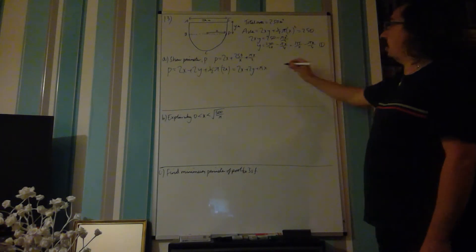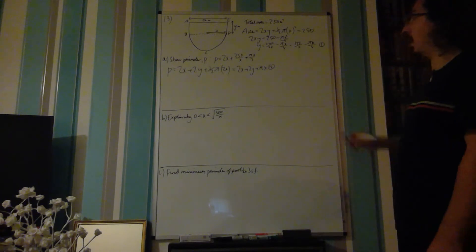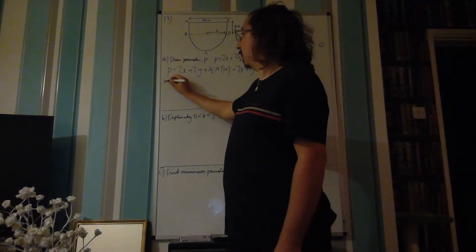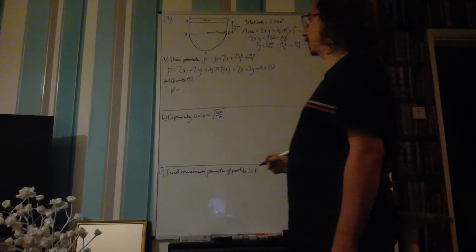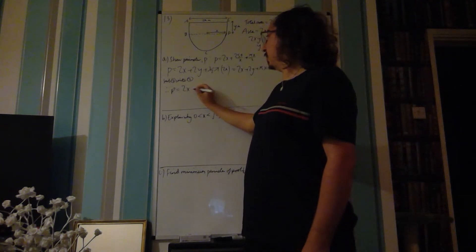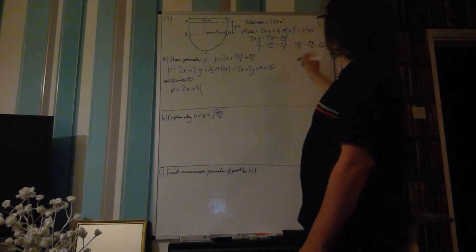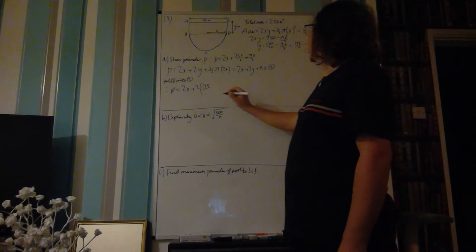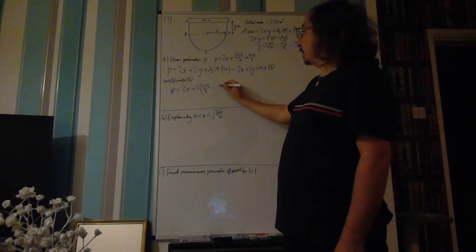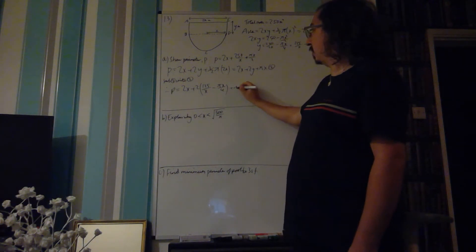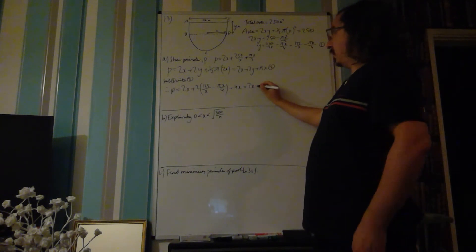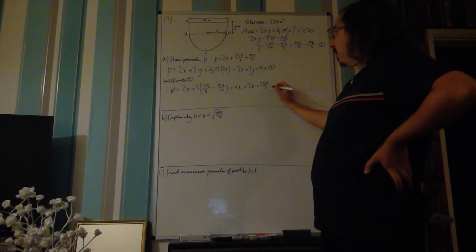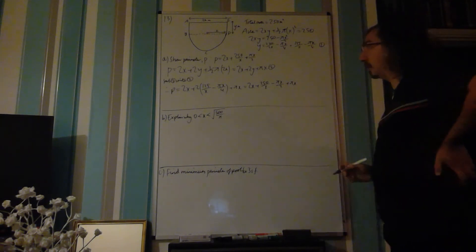Let's call that equation 1, let's call that equation 2. And if we say we're going to sub 1 into 2, we can look at our perimeter and say that that is equal to 2x plus 2 times 125 over x minus pi x over 4 plus pi x.